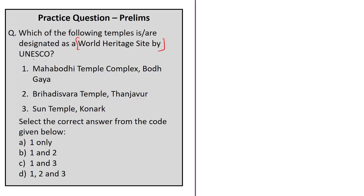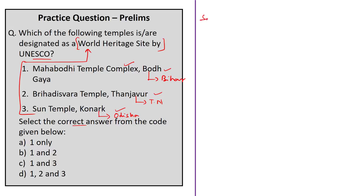The next question asks: which of the following temples are designated as World Heritage Sites by UNESCO? The options include the Mahabodhi Temple Complex at Bodh Gaya, Sun Temple at Konark, and Brihadiswara temple. All the given sites are designated as UNESCO World Heritage Sites: the Mahabodhi Temple Complex at Bodh Gaya in Bihar, the Brihadiswara temple in Thanjavur district of Tamil Nadu, and the Sun Temple or Konark temple in Odisha. Additionally, Buddhist monuments at Sanchi in Madhya Pradesh, the Brihadiswara temple at Gangaikonda Cholapuram, and the Airavateswara temple at Darasuram are also UNESCO World Heritage Sites. The correct answer is option D: 1, 2, and 3.